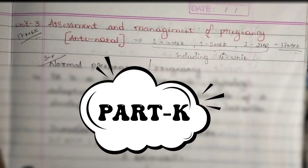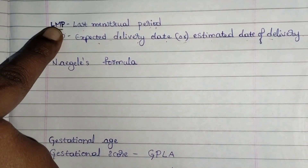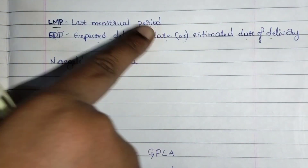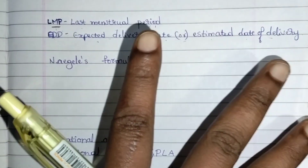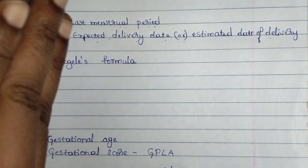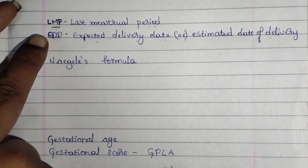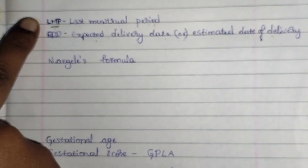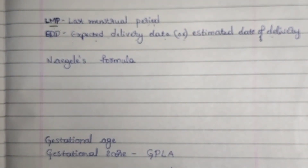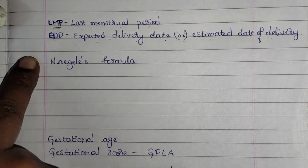Hello guys, it's Unit 3 Part K. Now you need to understand a few terms: LMP and EDD. LMP is nothing but Last Menstrual Period. EDD is nothing but Expected Delivery Date, or Estimated Date of Delivery, or Estimated Due Date. LMP is the date when the woman got her menses last. EDD is the date at which the woman may get her delivery pain, based on the LMP.